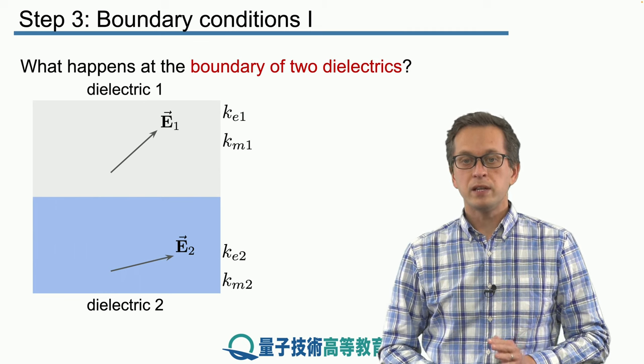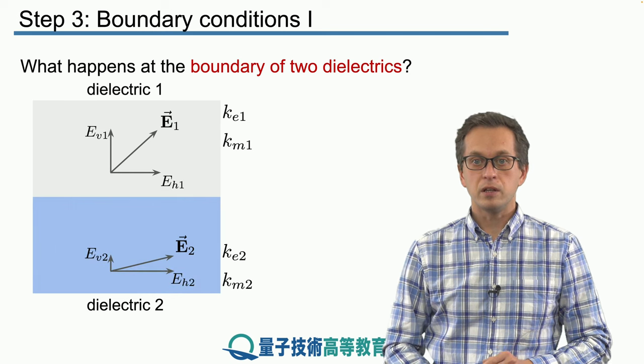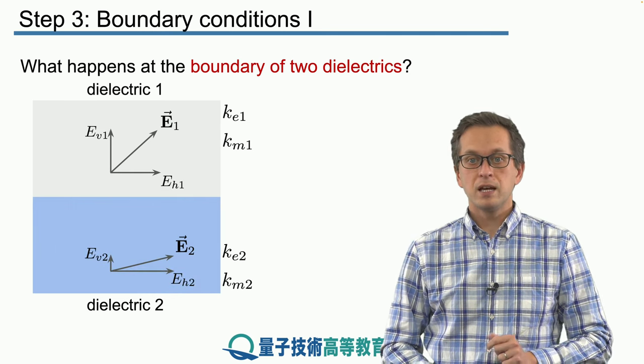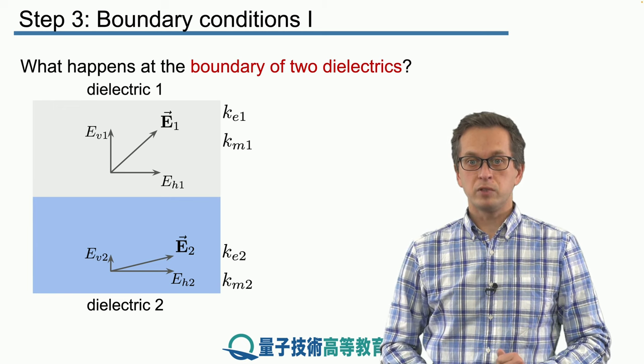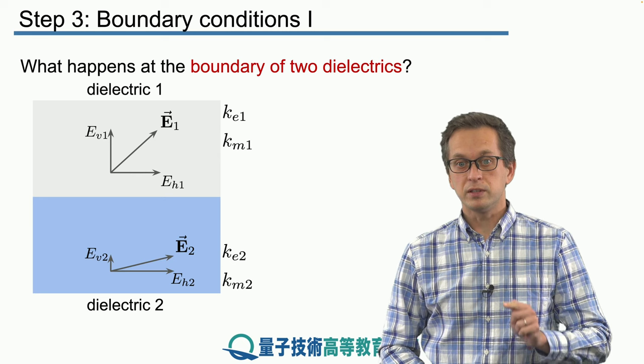We are assuming that in dielectric one it's got components in the vertical and horizontal direction that are different from the components in the vertical and horizontal directions of the electric field in dielectric two.